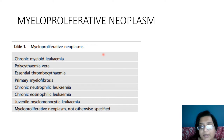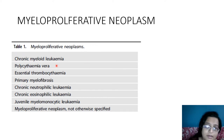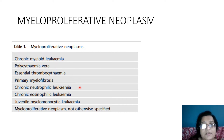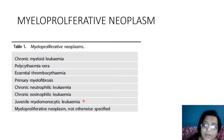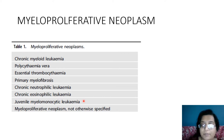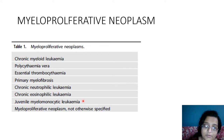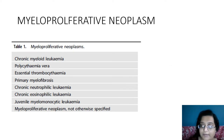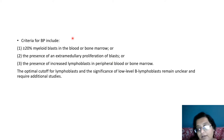In the updated classification, the myeloproliferative neoplasms include CML, PV, ET, PMF, CNL, and CEL — all previously known entities. Juvenile Myelomonocytic Leukemia (JMML), which was in the MPN/MDS bridging category, has now been moved into MPN. MPN NOS is also included.